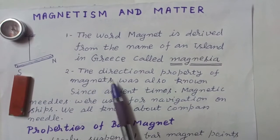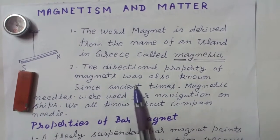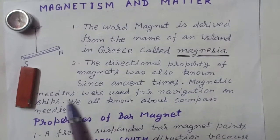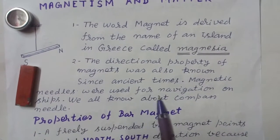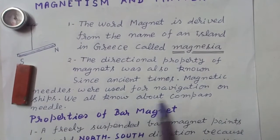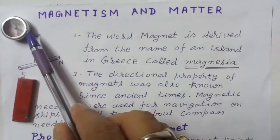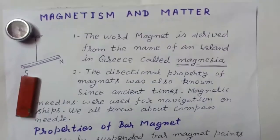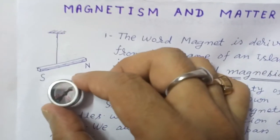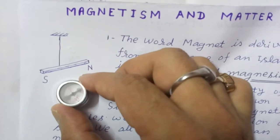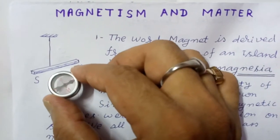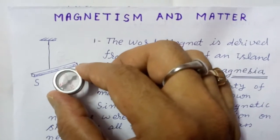The directional property of magnets was also known since ancient times. Magnetic needles were used for navigation on ships. We all know about the compass needle. This is a small compass needle, and it points in the north-south direction if no magnet is nearby.